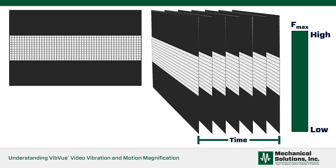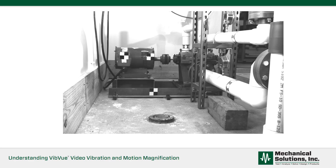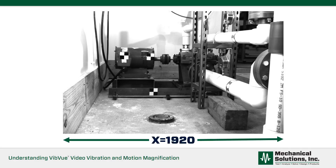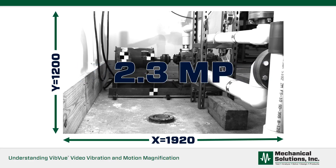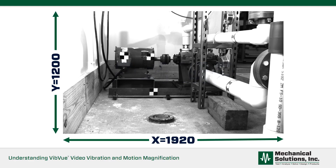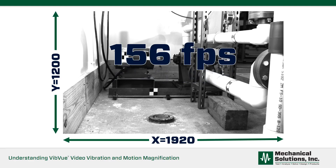Let's see how that works with our VibeView cameras. Our VibeView camera has 1920 pixels in the horizontal direction and 1200 pixels in the vertical direction. This resolution, referred to as 1920 by 1200, is a little better than Full HD and equates to about 2.3 megapixels. If we wanted all 2.3 million pixels available for measurement and magnification, the maximum frame rate could run to 156 frames per second, or a maximum frequency of 78 hertz.